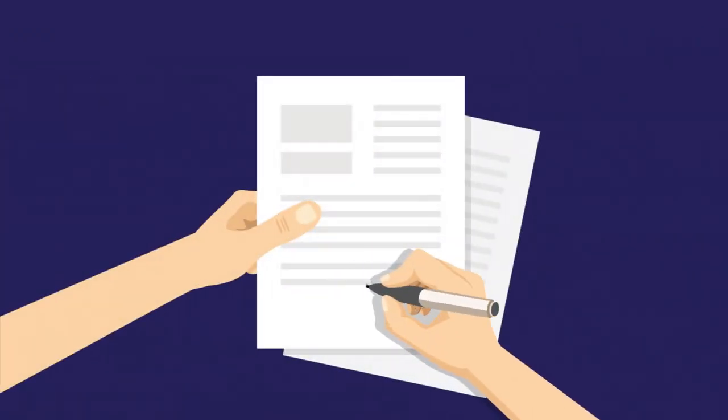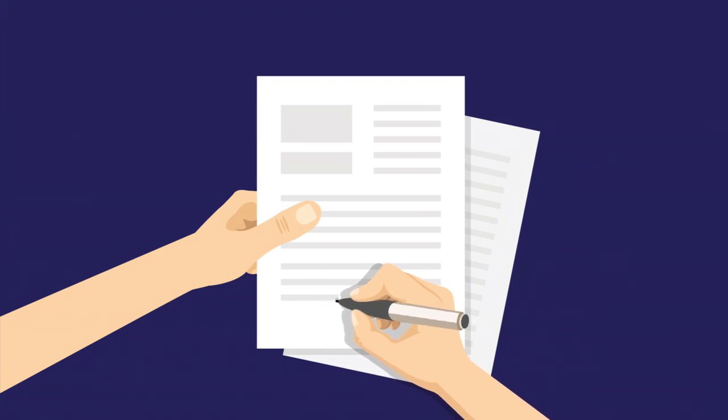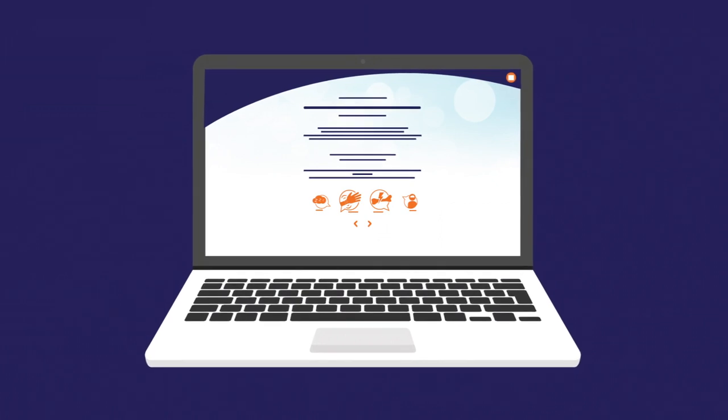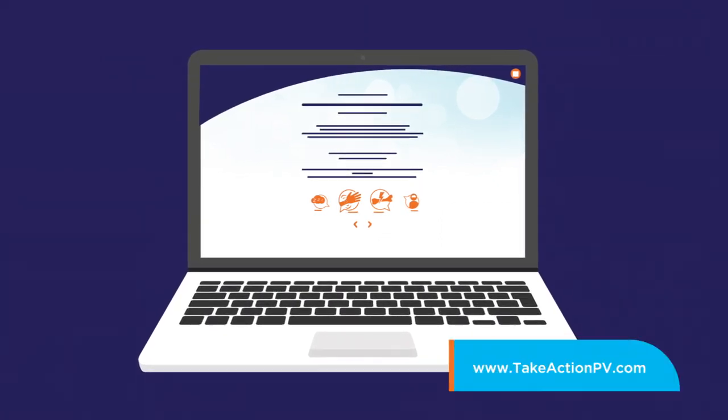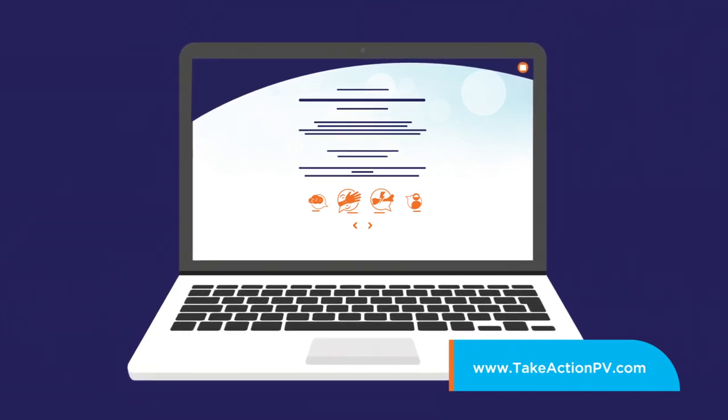Your care team may have you document changes in your PV symptoms by having you complete a form called the MPN-10 when you go in for an office visit. But you can also monitor your symptoms and changes at home. One resource for this is a customized symptom guide available at TakeActionPV.com.